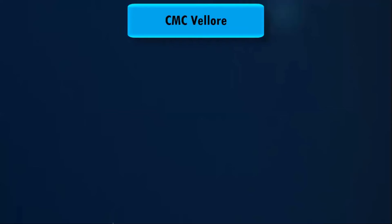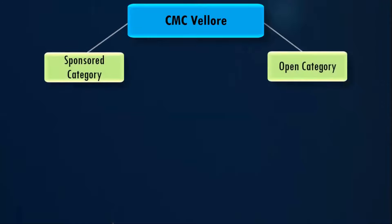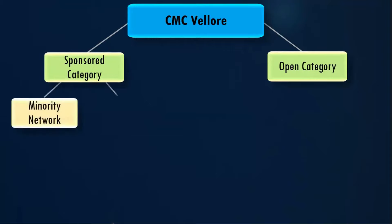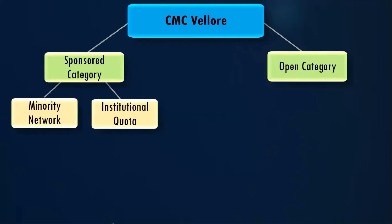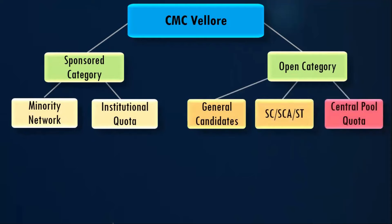CMC Vellore offers seats under two categories. One is called sponsored category, the other is called open category. Under the sponsored category, there is something called minority network seats, and they also have institutional quota, sometimes known as CMC Vellore staff quota. Under the open category, we have three different types of seats: general candidates — basically unreserved candidates from all over India — and SC, SCA, or ST candidates, also open to all India candidates.